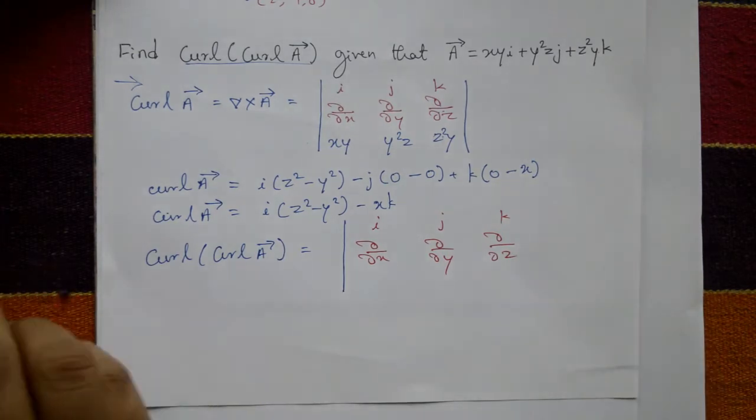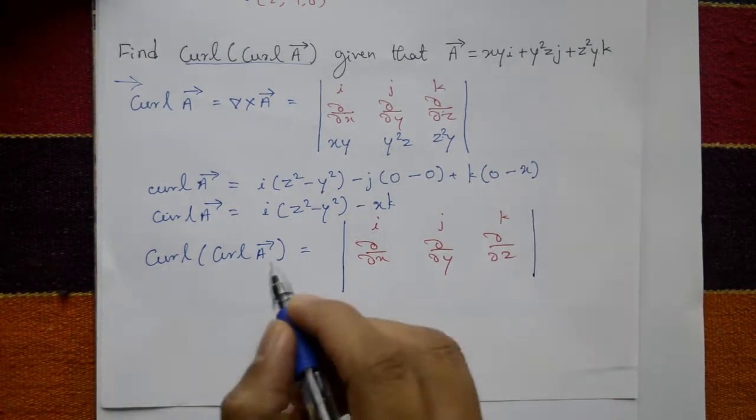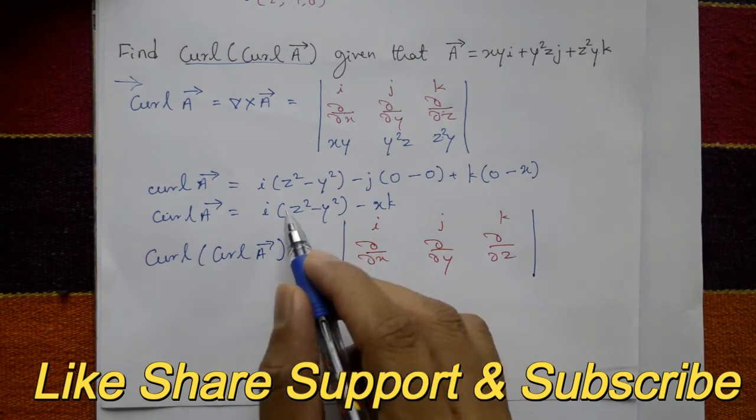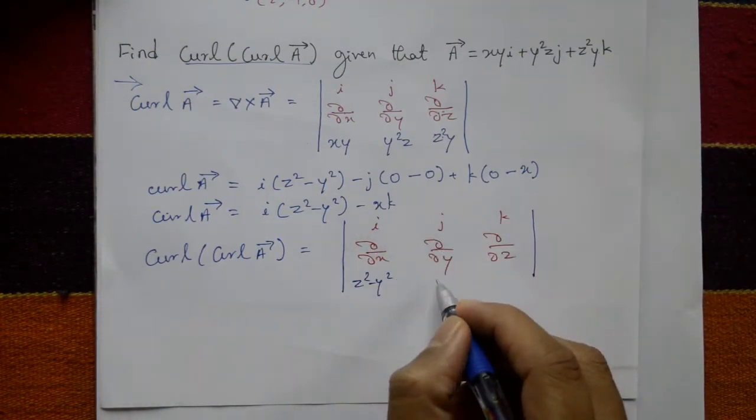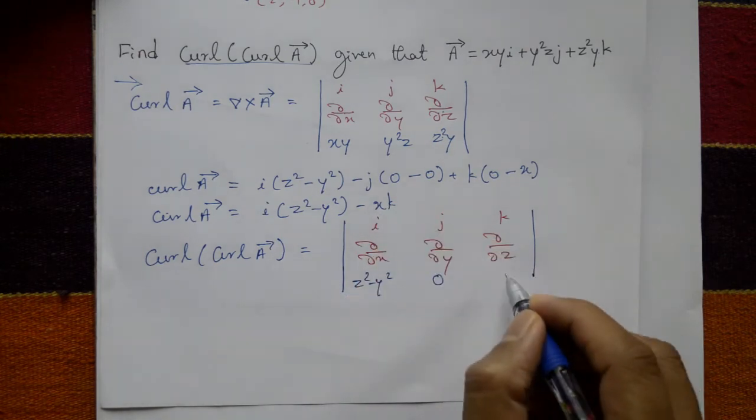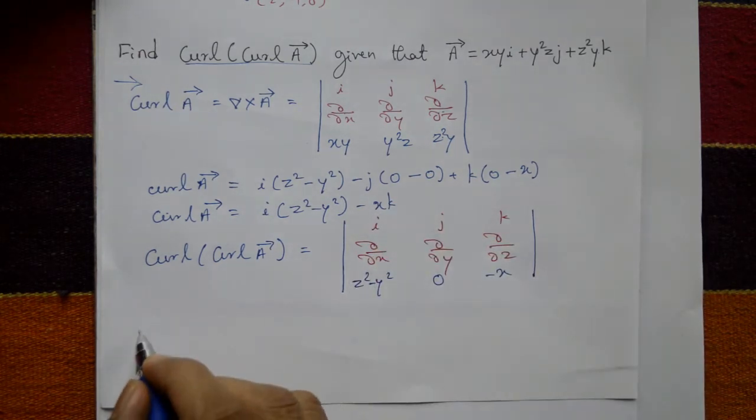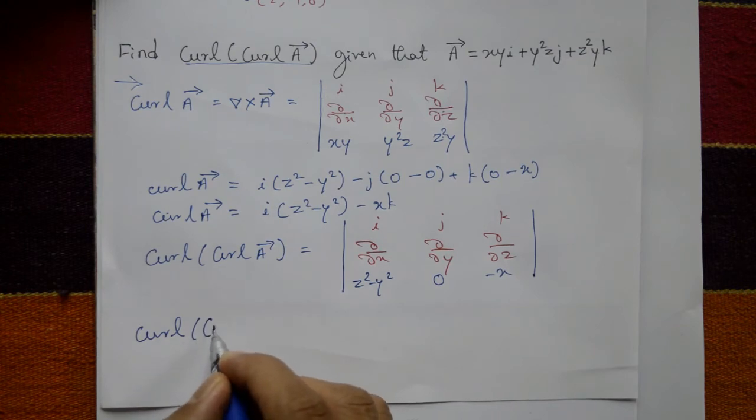Determinant is i j k, ∂/∂x ∂/∂y ∂/∂z. Curl of A means this one, coefficient of i is z squared minus y squared, coefficient of j is zero, and coefficient of k is minus x. Now expand this one.